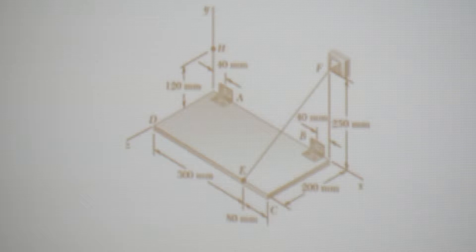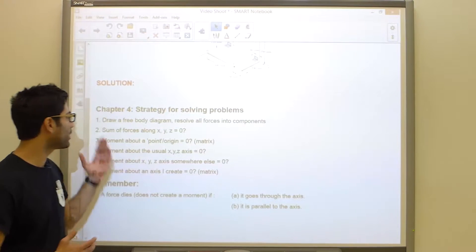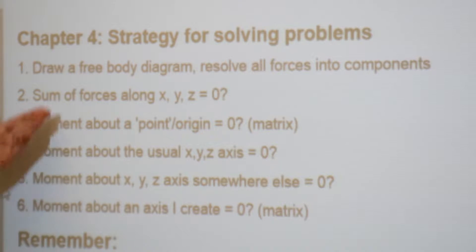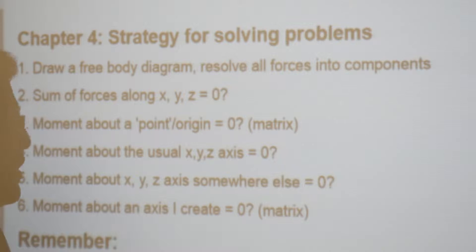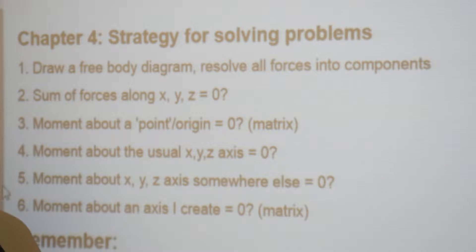Let's quickly reiterate our strategy for solving these types of problems. The first step is to make a free body diagram and resolve any force we don't like into its components. Then you have Sigma FX, Sigma FY, Sigma FZ set equal to zero. You can also take the moment about some point or the origin, or take the moment about the usual X, Y, or Z axis to see if that allows you to calculate something.